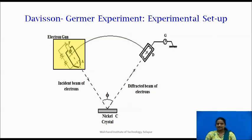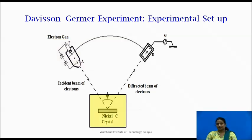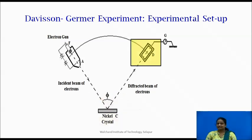These electrons were scattered by a nickel crystal located at C. The crystal can be rotated on the axis. The number of electrons scattered by the crystal in different directions was measured with the help of the detector D which can be moved on a scale.